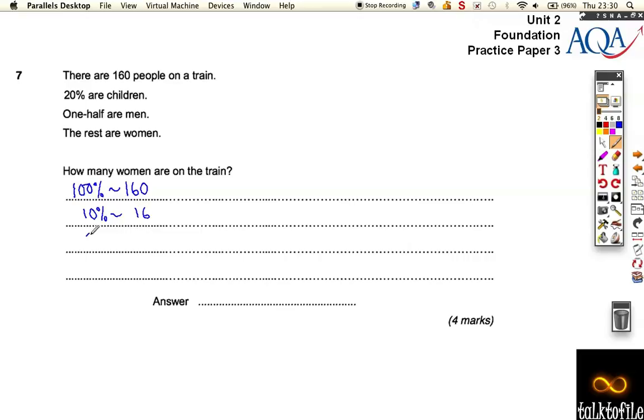So to find 20%, which is the children, we've got to double that. So there are 32 children.